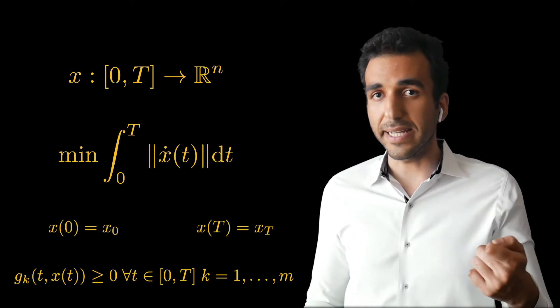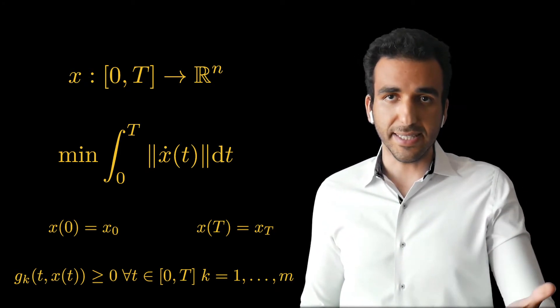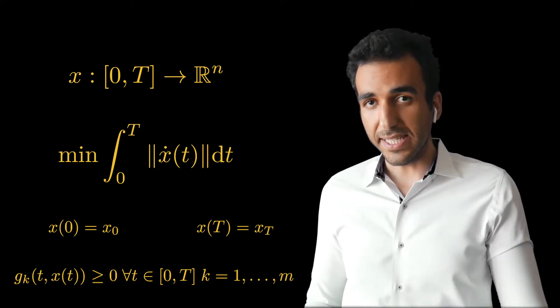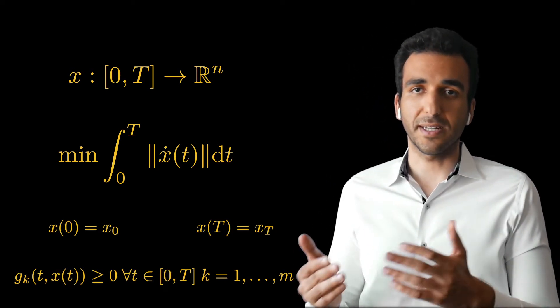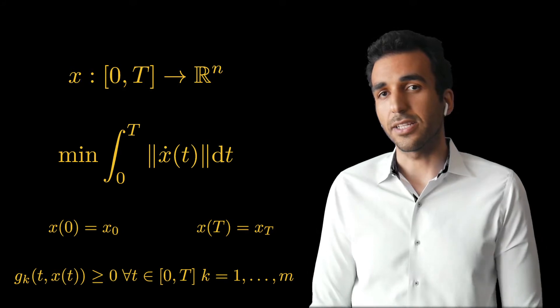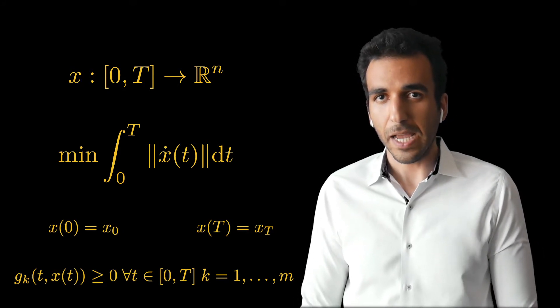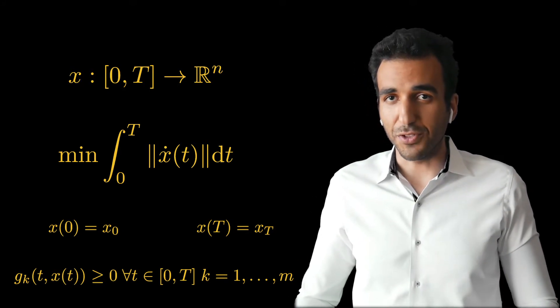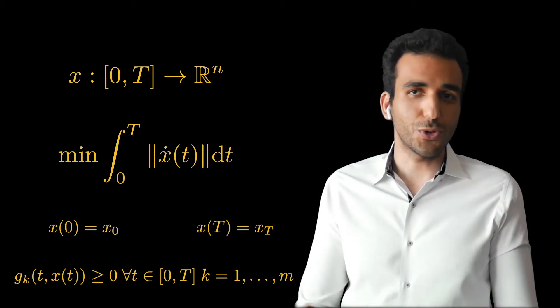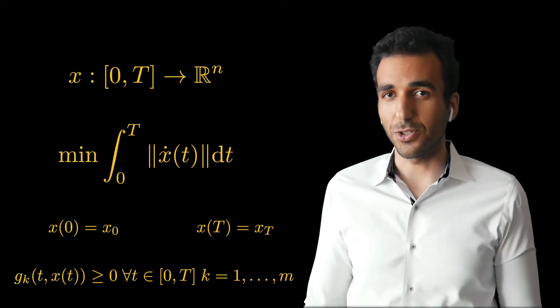For every obstacle k, I have a function g_k that depends on time and x, and I want this g_k to be negative. What this is saying is that at time t I want my path to avoid obstacle k. So far I have just simply reformulated the motion planning problem as an optimization problem.